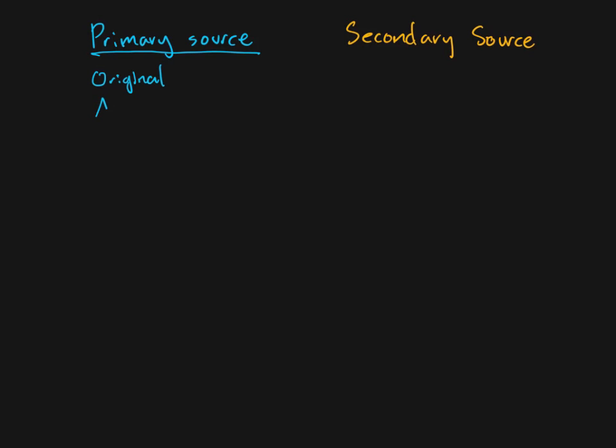So a primary source, another way of putting this, is it's something that is describing the author's direct experience. So it's original, in other words, this is the place where it originated from. The source you're looking at is the original source. It is directly from the author's own experience. Another way of putting this is, this is a first-hand report.